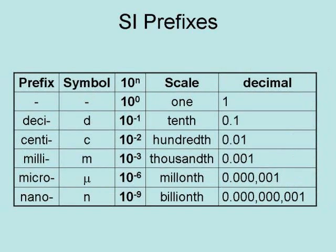On the small side, you have deci for a tenth, centi for a hundredth, milli for a thousandth, micro for a millionth, and nano for a billionth.